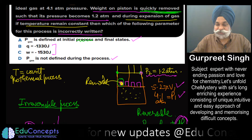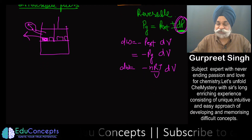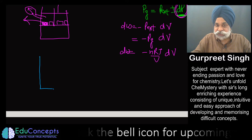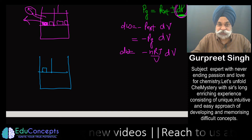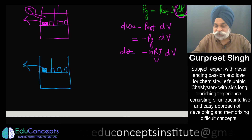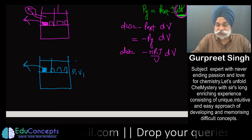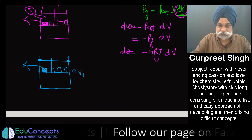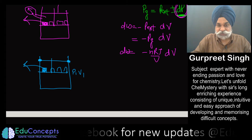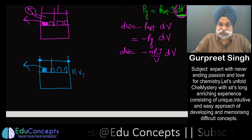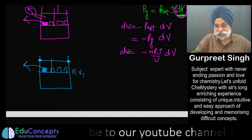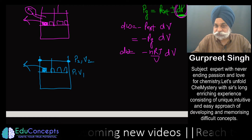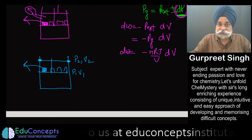We are left with two numerical options. Now chronologically, what has happened is: you removed one weight, so the system went from P₁V₁ to a new state. There must be some pin or stop that halted the piston, so it stopped at a new position giving pressure P₂ and volume V₂.